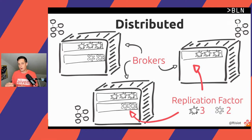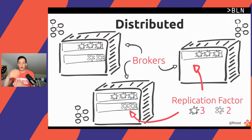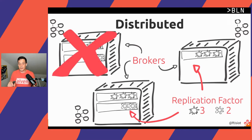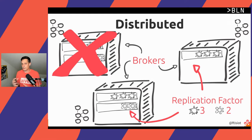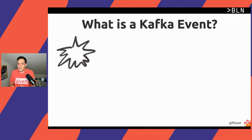Why do we store multiple copies of the same topic over our brokers? Because computers are not entirely reliable and we could lose a node. But if you check, we are not going to lose any data — both topics are still there and available. So we understood how Kafka works on the backend. Now let's try to understand what an event is for Kafka.